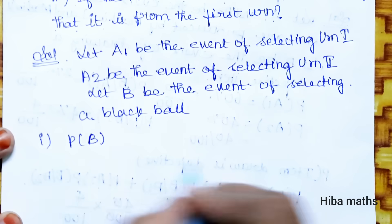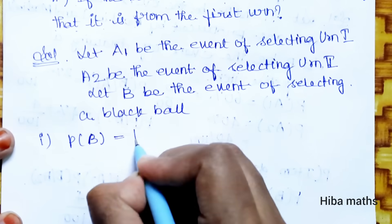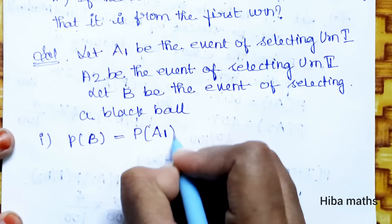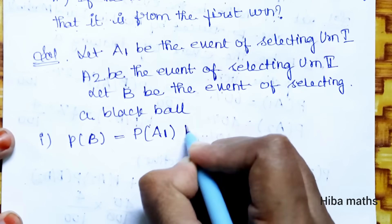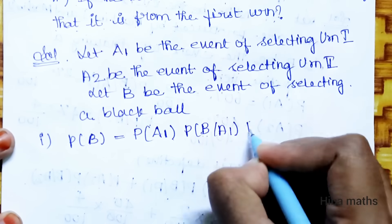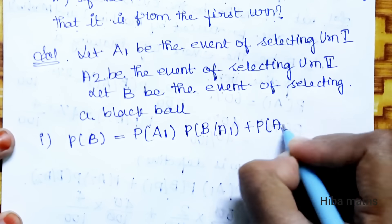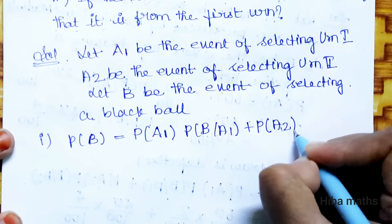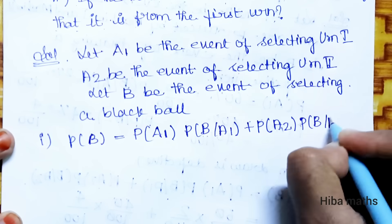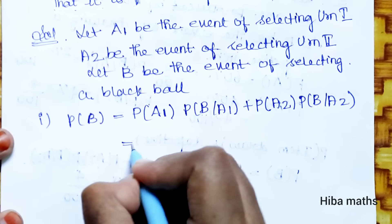Using total probability, P(B) equals P(A1) times P(black ball from Urn 1) plus P(A2) times P(black ball from Urn 2).